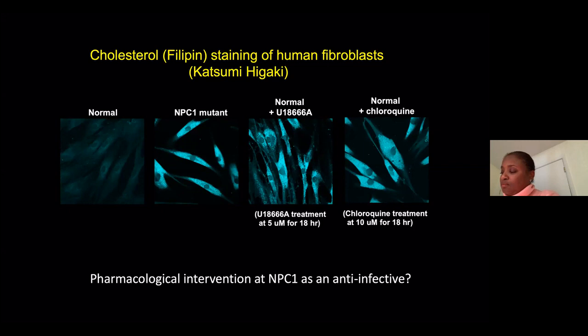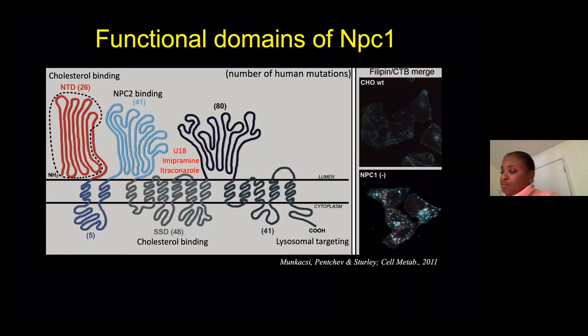The point of my talk is that we can intervene pharmacologically at NPC1 as a possible anti-infective. This is the NPC1 protein, found on the limiting membrane of the lysosome, and it's responsible for moving cholesterol — as it comes in from the outside of the cell — out of the lysosome and redistributing it to the rest of the cell. Drugs that I'm going to tell you about bind to the so-called sterol-sensing domain. There are several drugs: U18666A, imipramine, and itraconazole. All of these drugs and all defects in these genes show an accumulation of cholesterol in the lysosome.